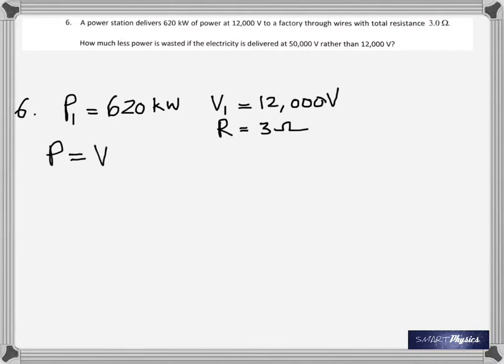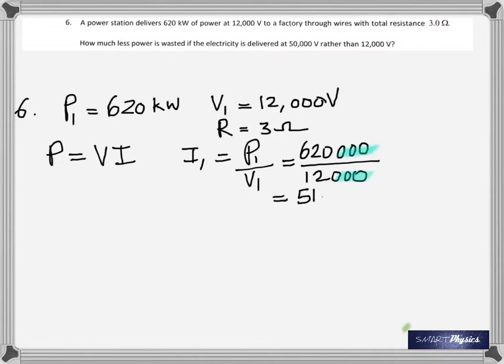A power station delivers 620 kilowatts of power at 12,000 volts to a factory through wires with total resistance 3 ohms. How much less power is wasted if the electricity is delivered at 50,000 volts rather than 12,000? Now how is electricity wasted? It's in the form of heat, and the heat produced is given by I squared R T. Okay, so that's the idea. In the first case, let's see, the power is 620 kilowatts, voltage is 12,000, resistance is 3 ohms. But from the formula power is voltage times current, we can find the current. 620,000, because we change kilowatts into watts, divided by 12,000, you get the current is 51.67 amperes. And therefore the power wasted is I squared times R, because that's the formula for heat produced. You get 8009 joules wasted.